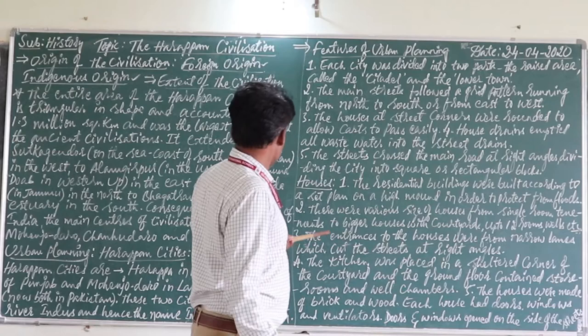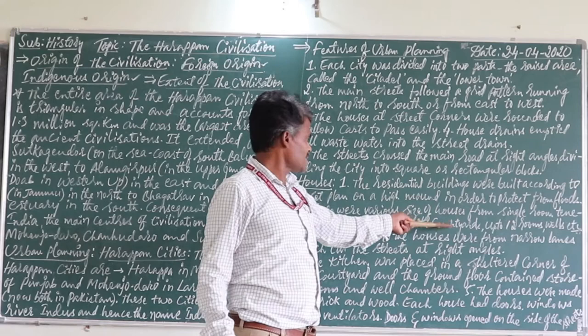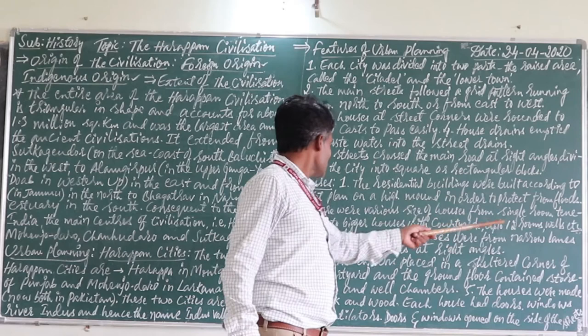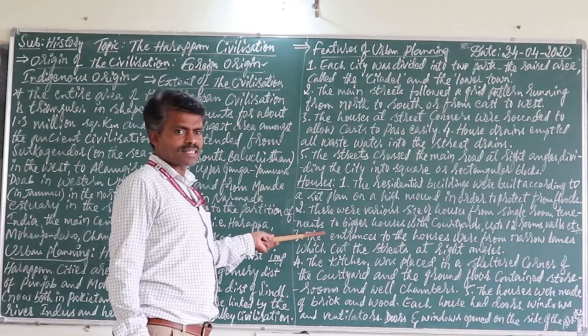So the second characteristic is that there were various sizes of houses, from single rooms to 12-room houses with wells and courtyards — this is the second main characteristic.